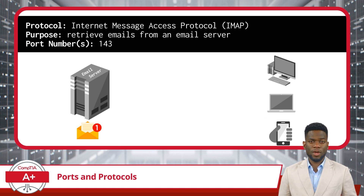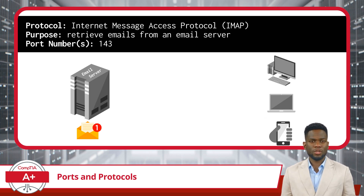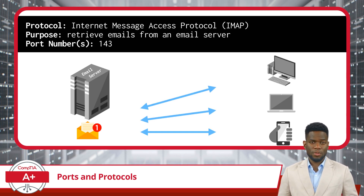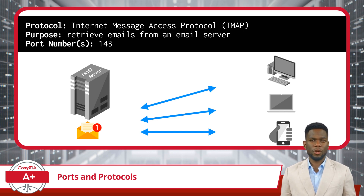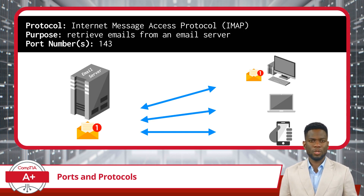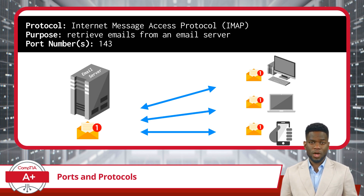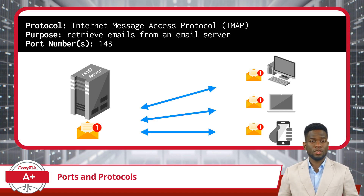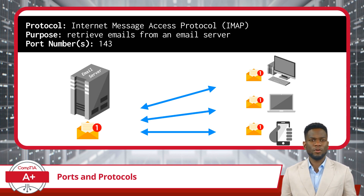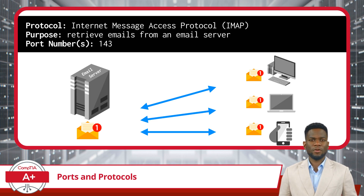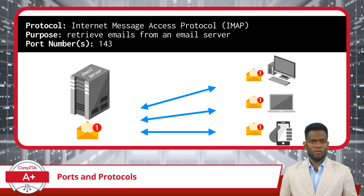Now we have one more email protocol: IMAP, or Internet Message Access Protocol, a modern synchronized way of handling emails. When you use IMAP, your email client stays connected to the server and keeps emails stored there while syncing them across multiple clients. The main advantage is that you can access your emails from multiple devices — workstation, laptop, or smartphone — and they'll always be in sync. Any changes you make on one device, like reading, replying, or deleting emails, are reflected on all your devices.